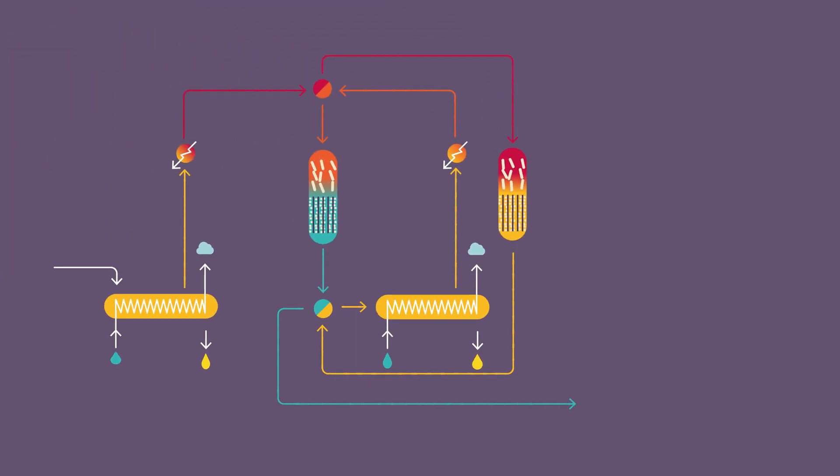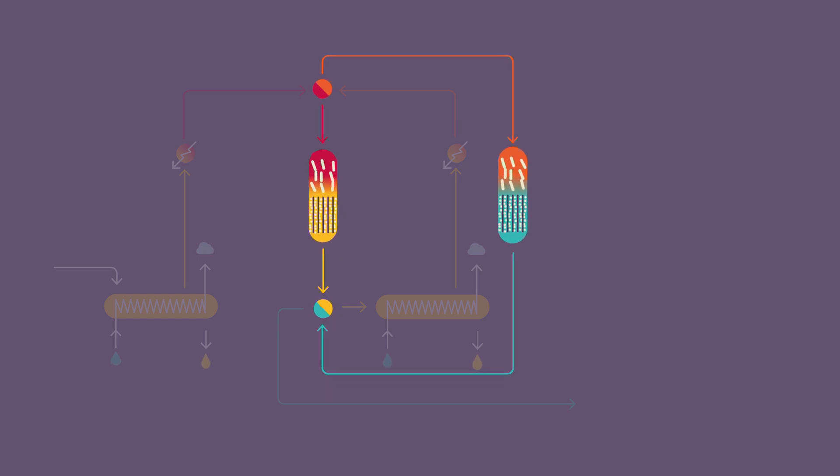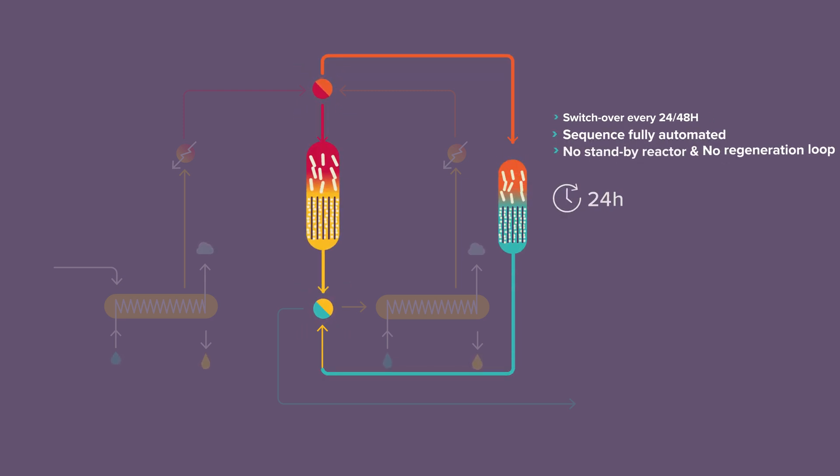After the switchover, the reactors change their positions in the process, and a new cycle starts. This sequence occurs every 24 to 48 hours, and it is fully automated, without any operator action, and without standby reactor and dedicated regeneration loop.